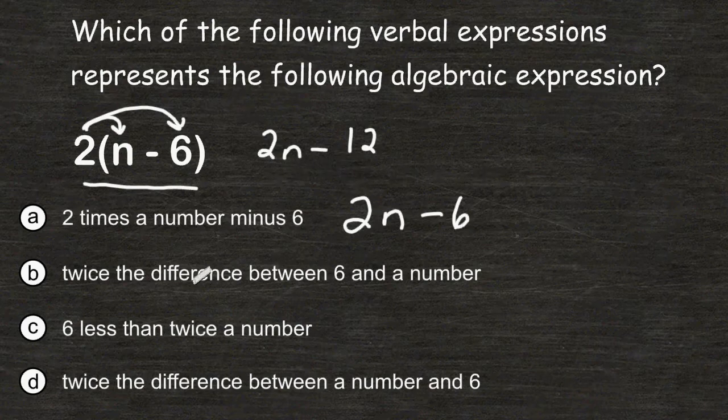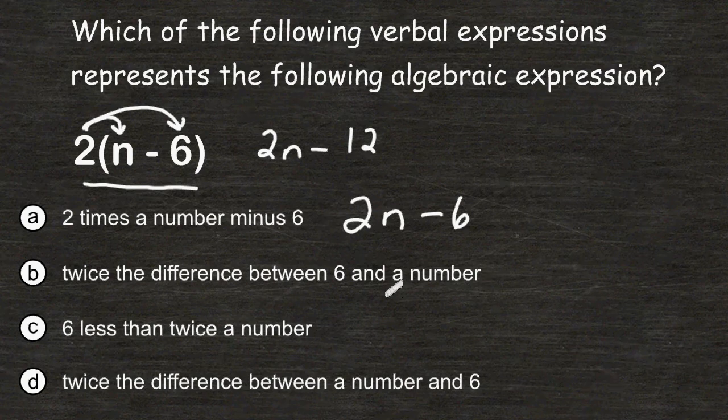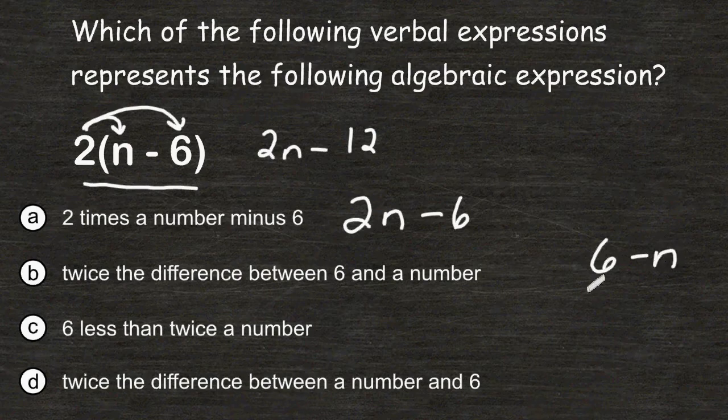Let's look at choice B. Choice B reads twice the difference between 6 and a number. Well, the difference between 6 and a number would be 6 minus n, and they want double that difference.